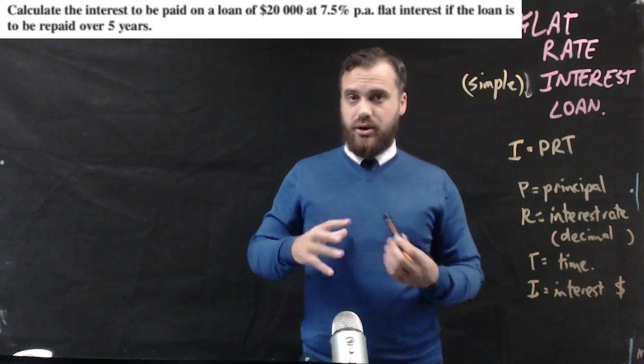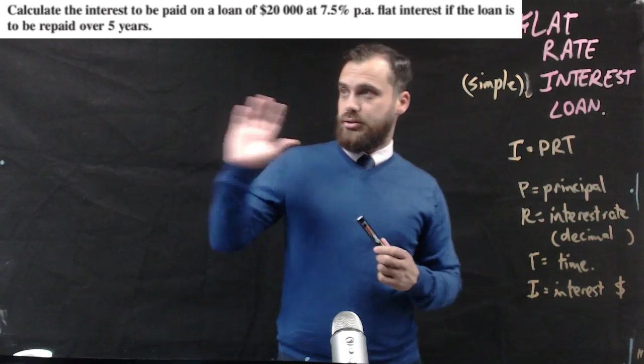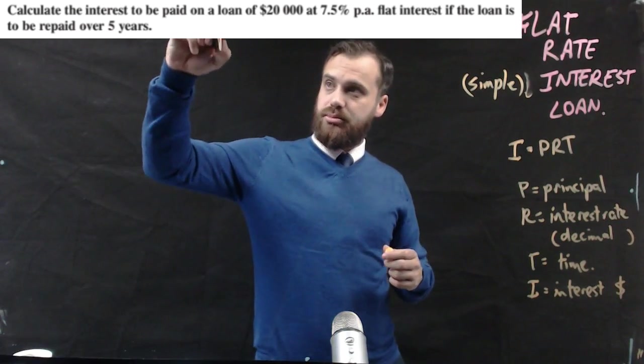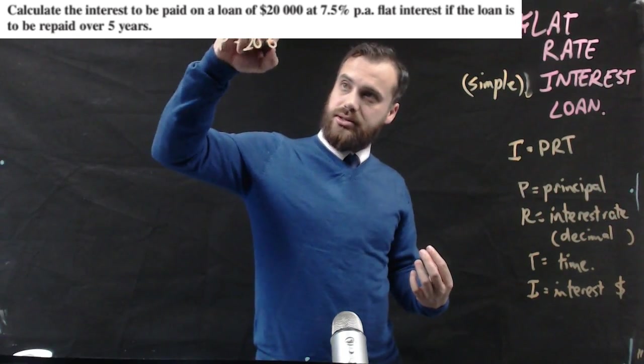So the way that I do these questions is really simple. I just write this stuff out. So there's my question. So that means that the principal, that's the money that I borrow, is equal to $20,000.